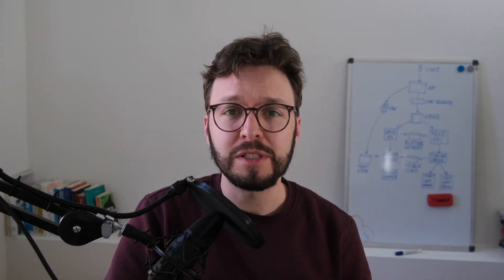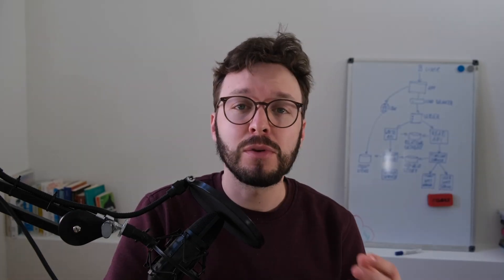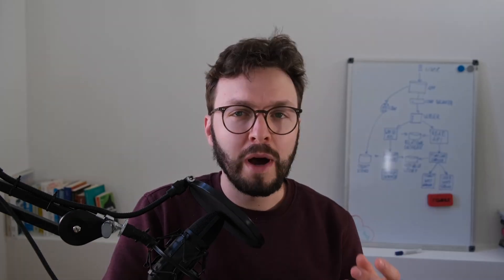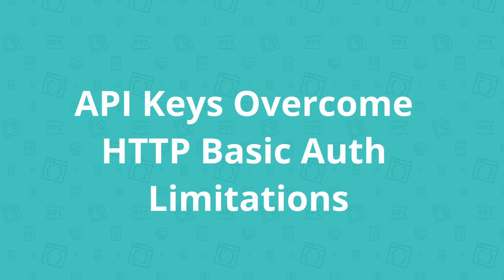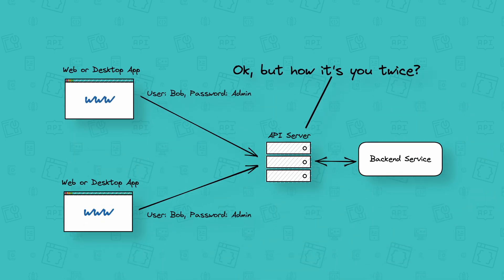You probably have your own experience with API keys — that massively long encrypted string you add to your requests for certain APIs. But why is that and how does it work? API key authentication is a technique that was invented to overcome the weaknesses of shared credentials, which was a big problem in HTTP basic authentication. It was impossible for the server to tell apart different client applications when multiple clients used the same valid credentials.